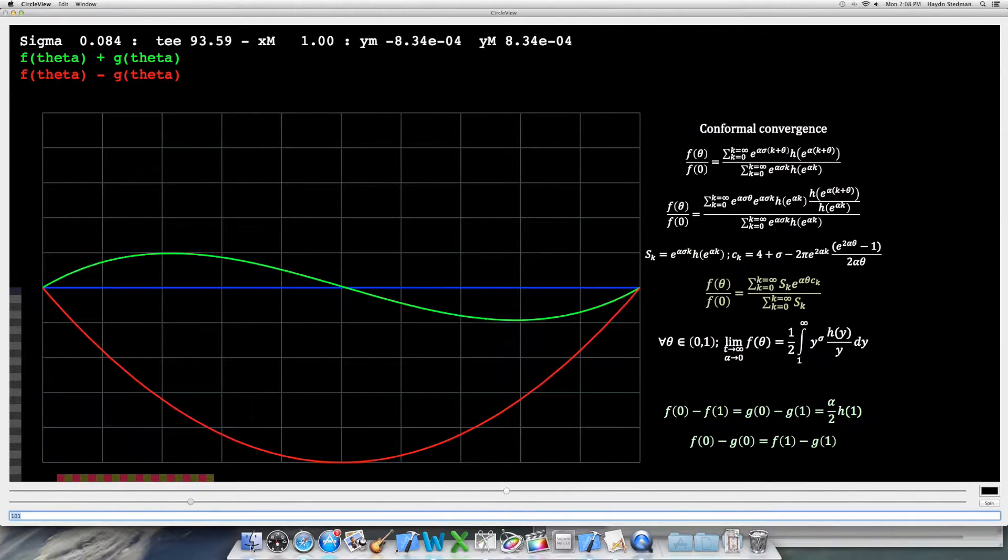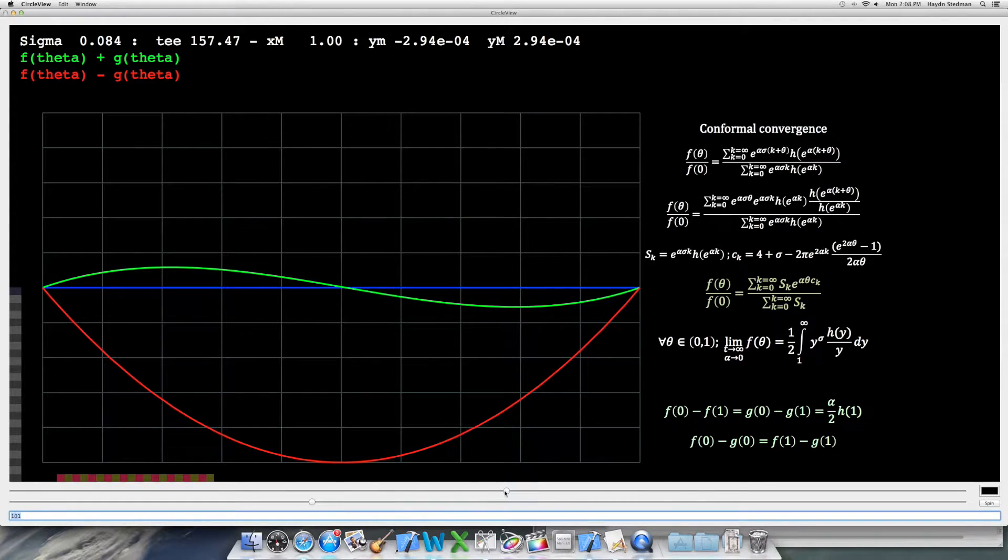F plus G, F minus G, F minus G, they look true to metric. We see the conformal convergence which just maintains its shape, constant factor and the end point equalities.